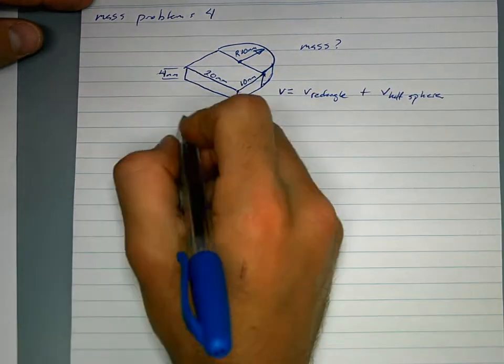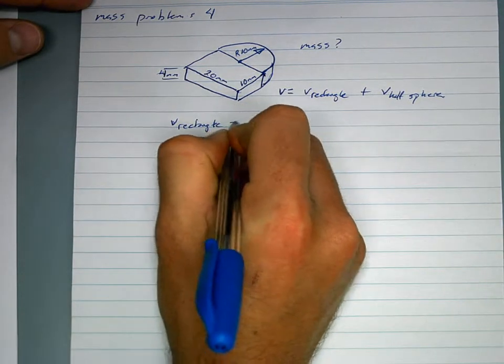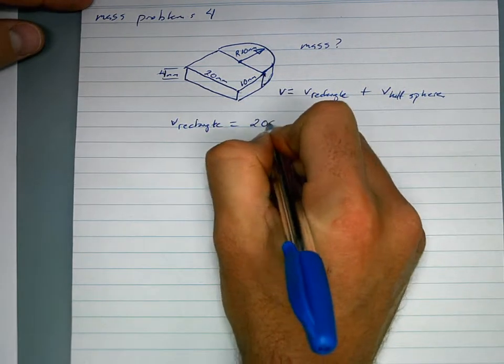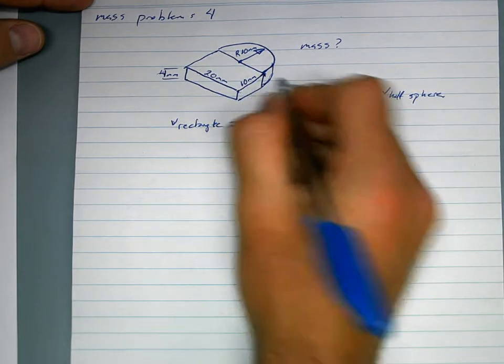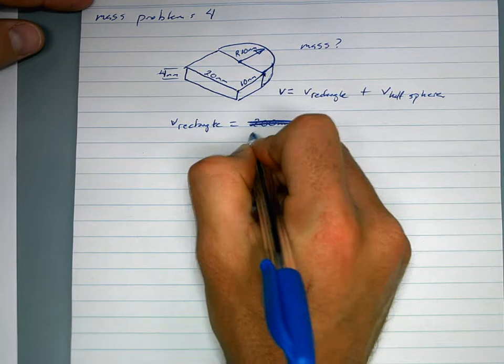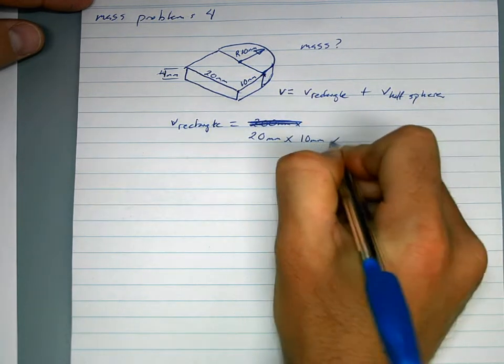So the volume of the rectangle would be 20mm times the width, oh sorry, it's not 200, 20, times the width times the thickness.